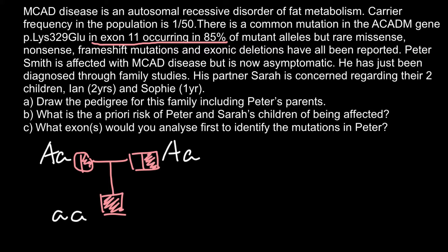His parents are phenotypically normal but are carriers. Peter is married to Sarah, and they have two children — a boy and a girl. Now they want to find out the probability for their children to be affected. The only way for the children to be affected would be if their mother is heterozygous.